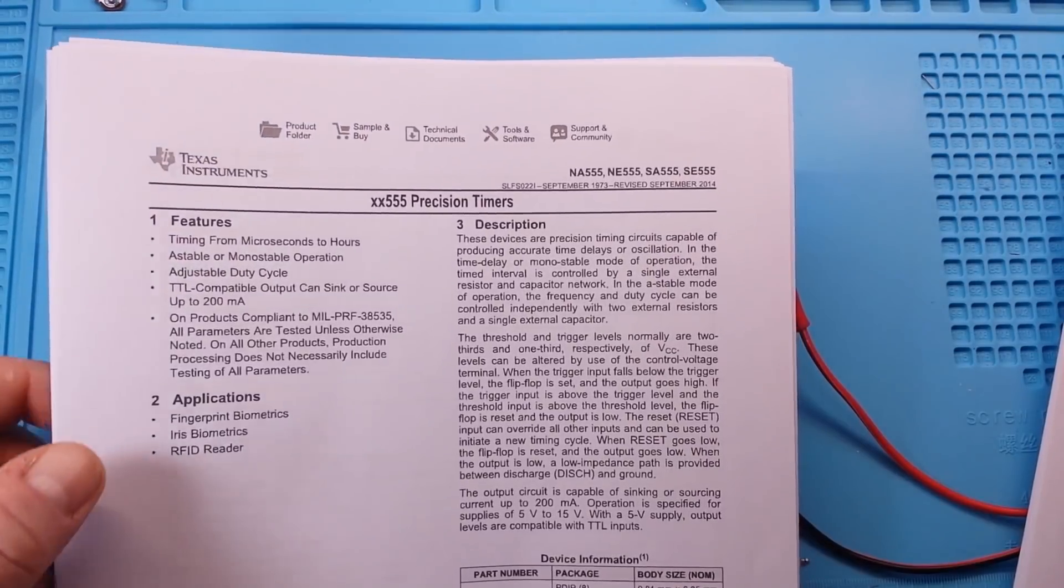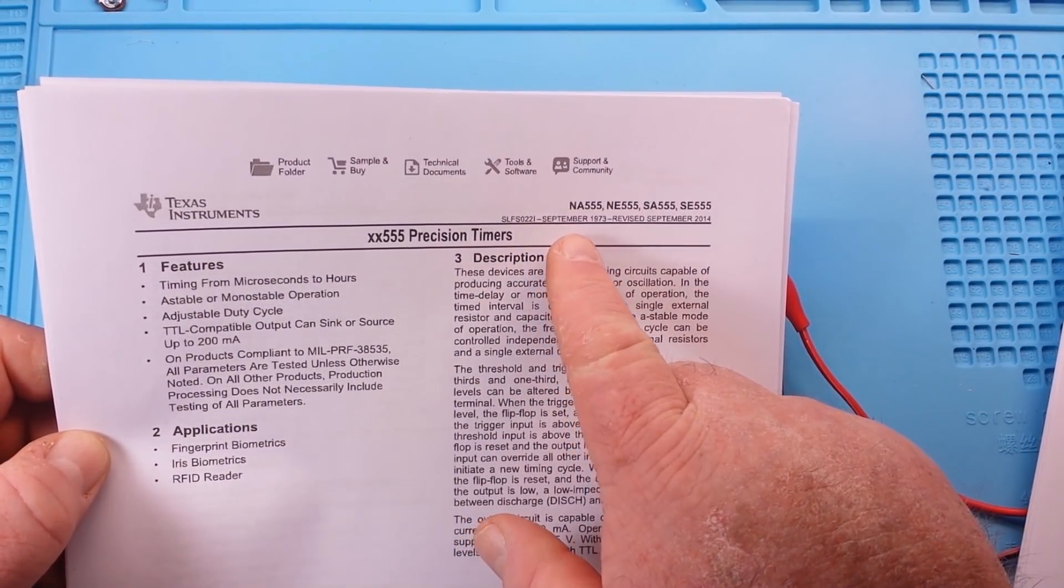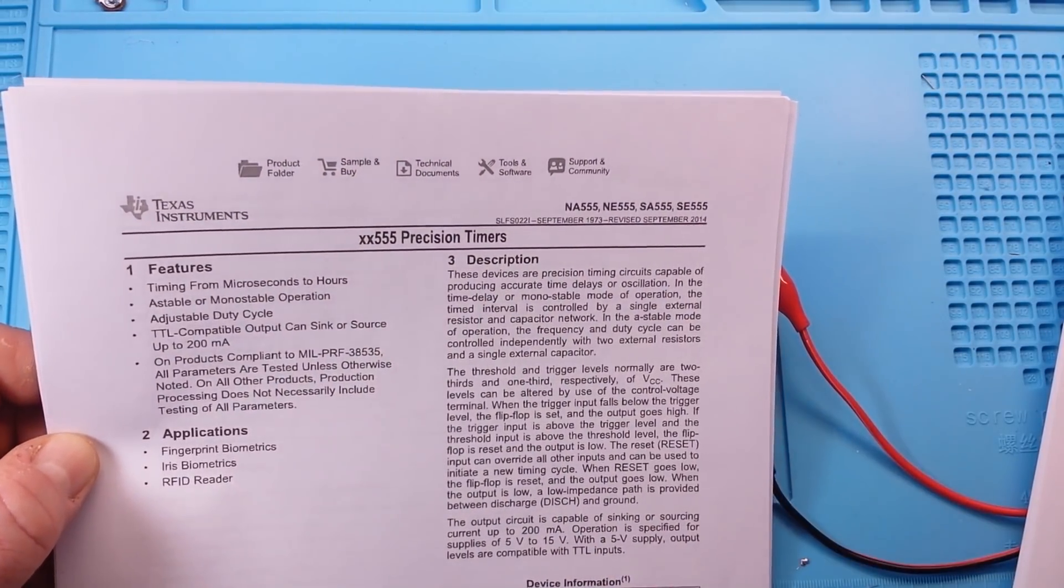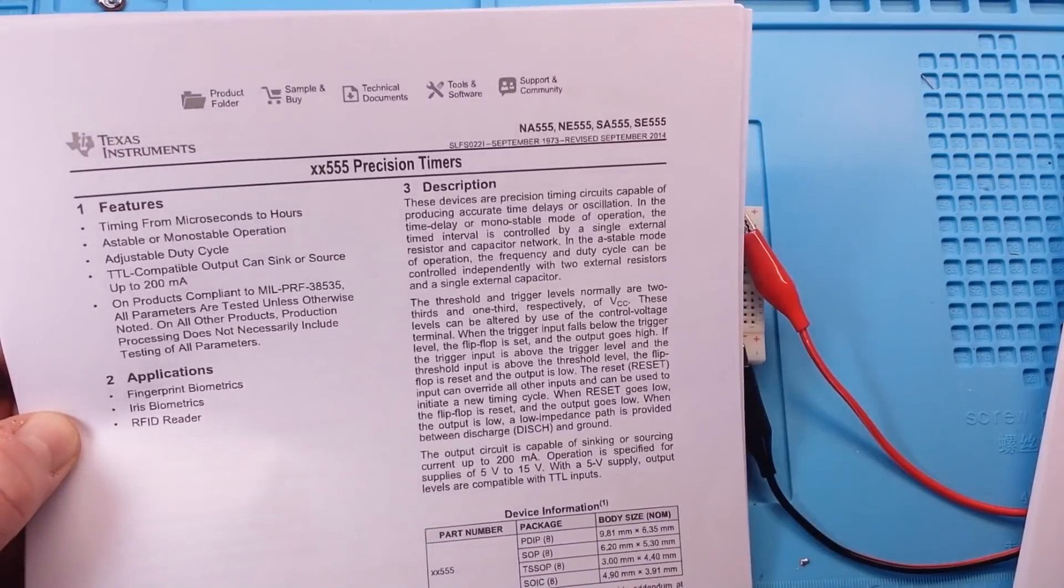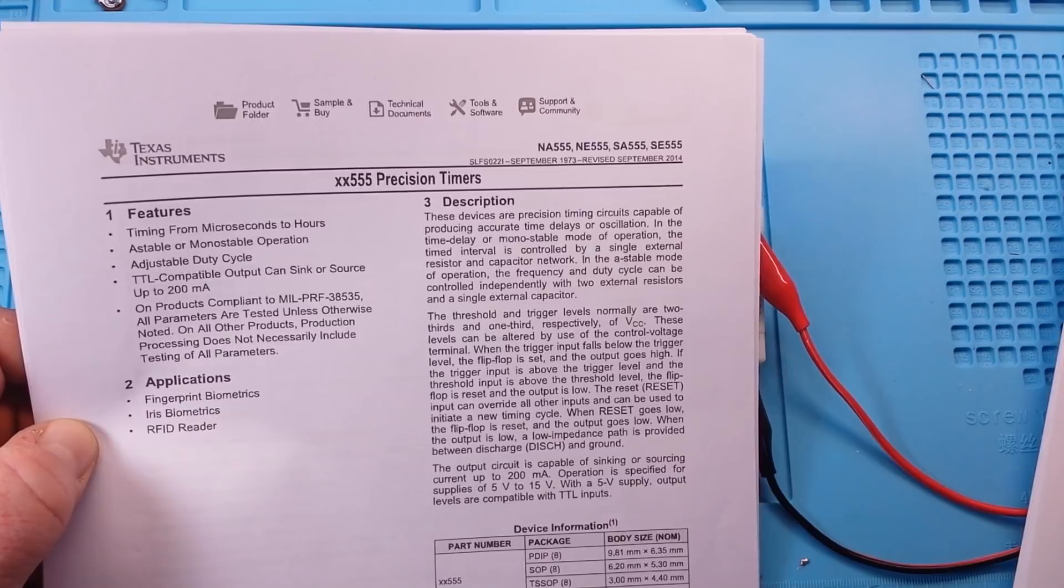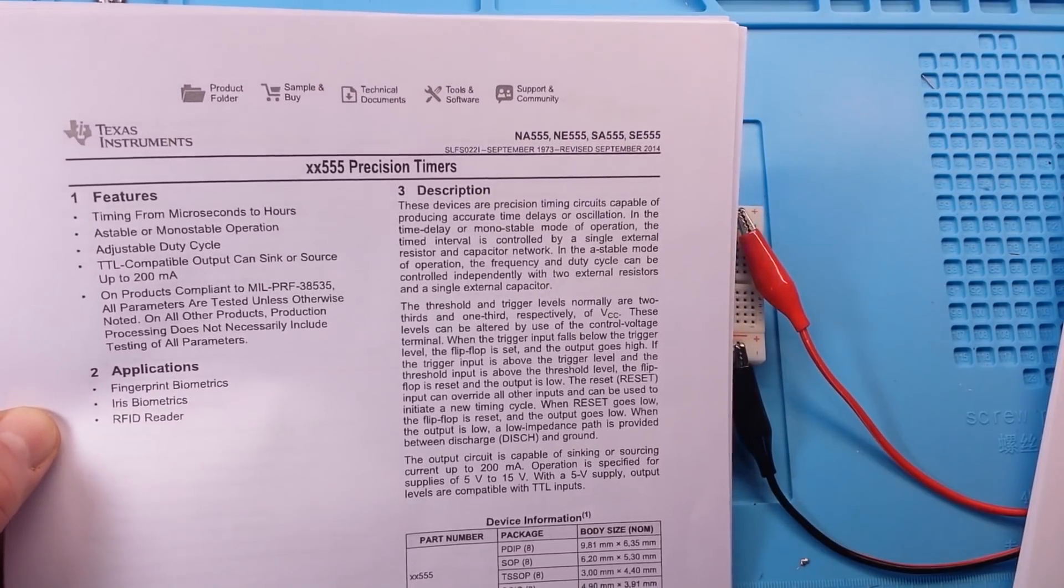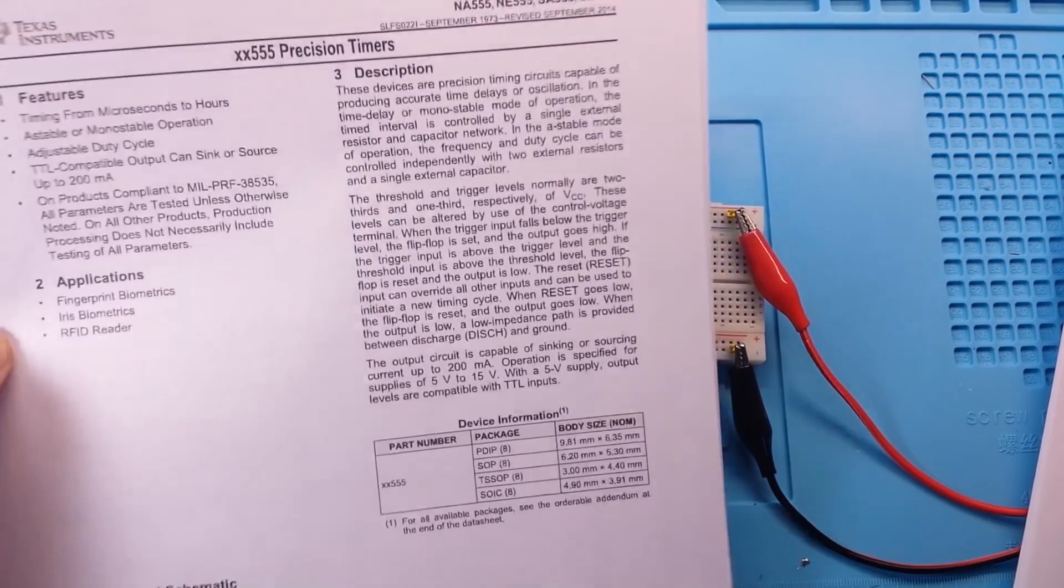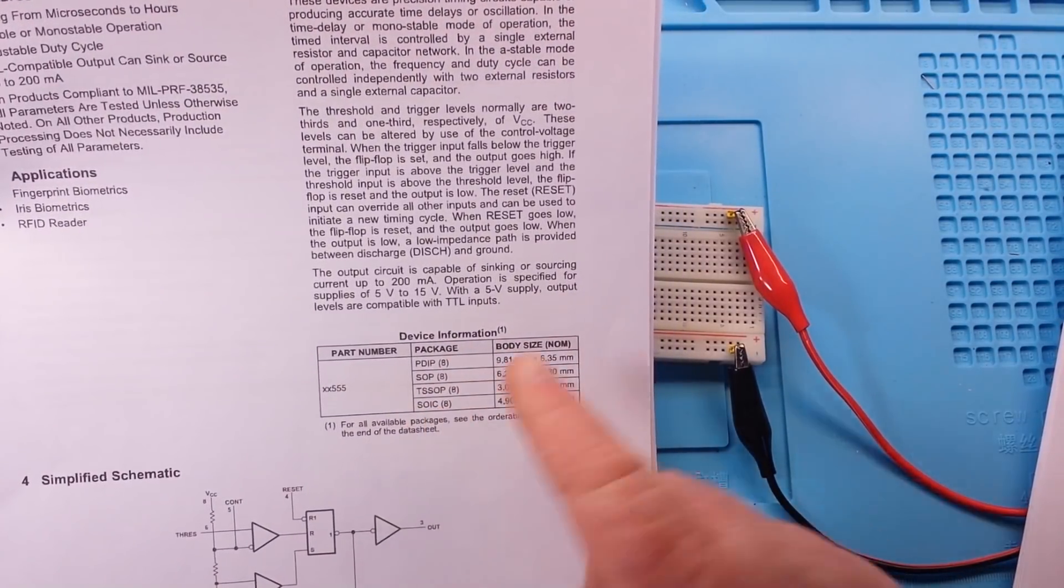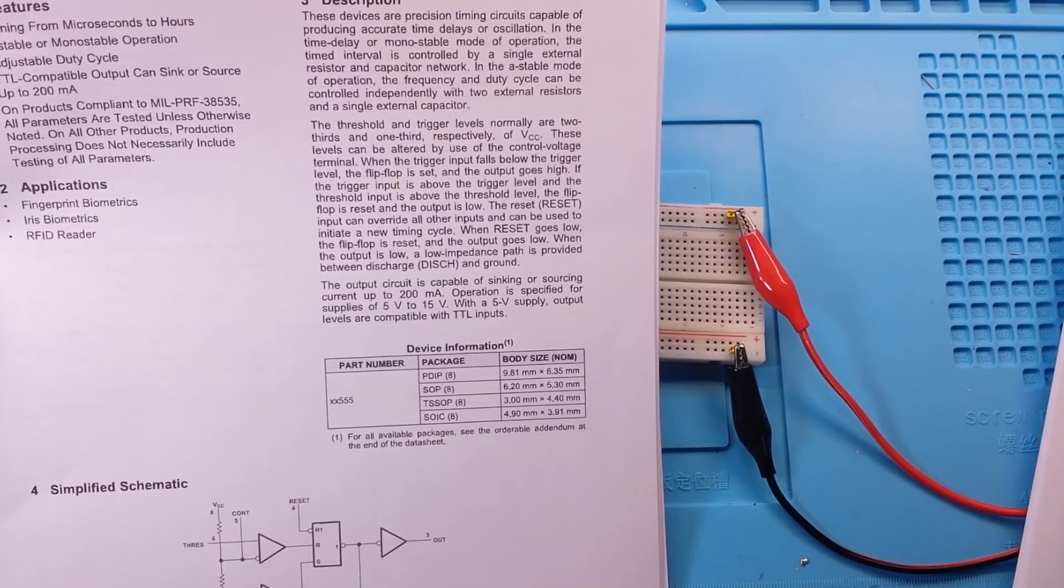If you take a look here at this datasheet, which is one by TI, you'll see it is originally from September 1973, revised in 2014. But yeah, that's how old the 555 timer is. It actually was invented in 1972 by a company called Cignetics by Hans Kamenzine. And yeah, it is available in just about any package that you could be looking for.